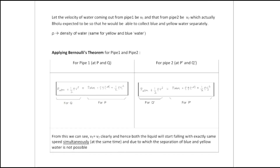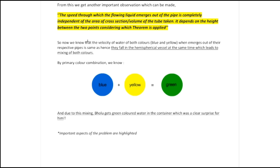So what is the conclusion we get from this? The speed with which the flowing liquid emerges out of the pipe is completely independent of the area of cross-section or the volume of the tube. It just depends on the height between the two points considering which the theorem is applied.